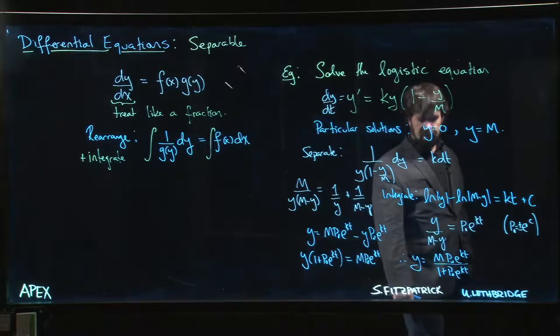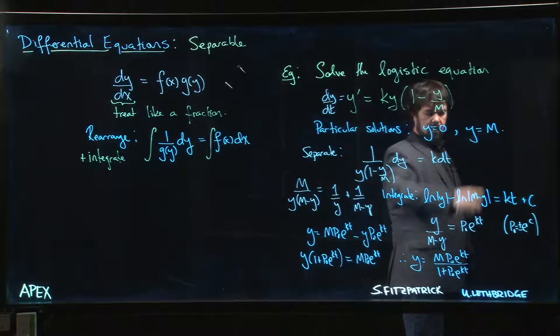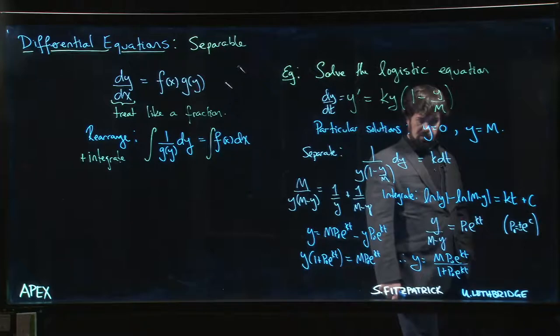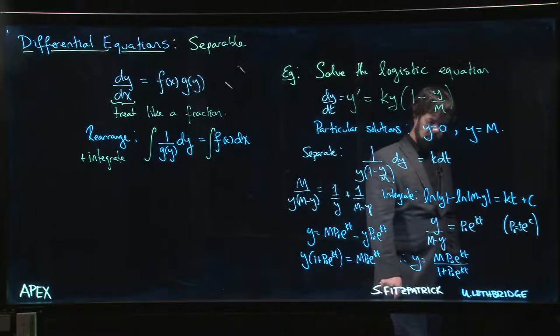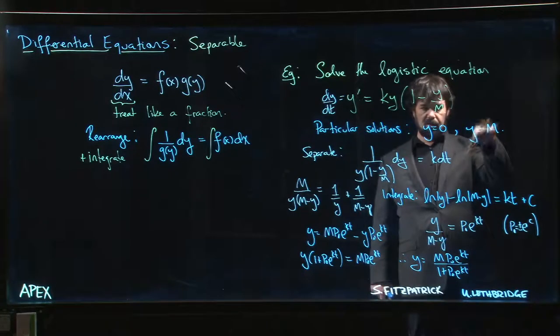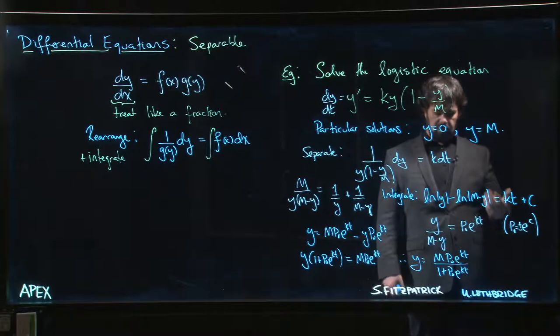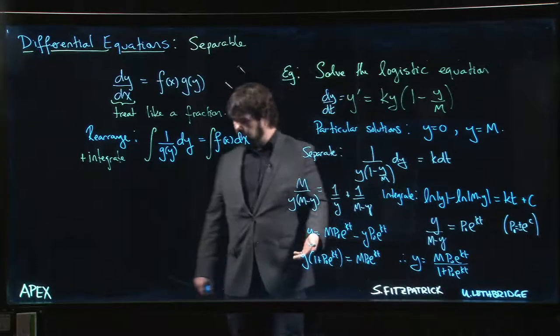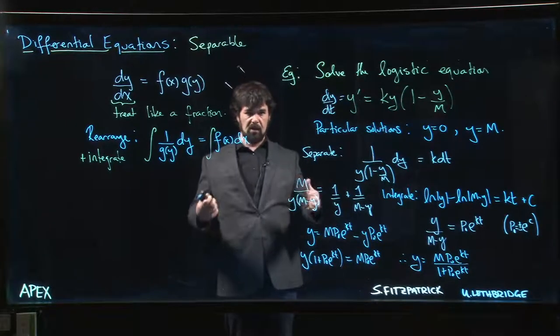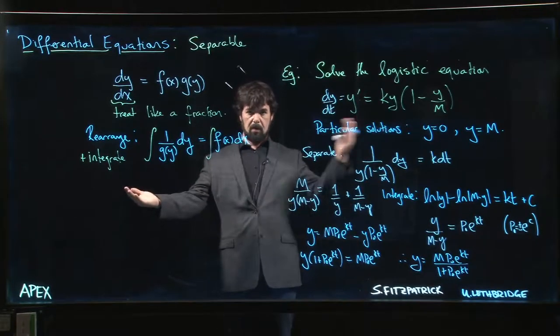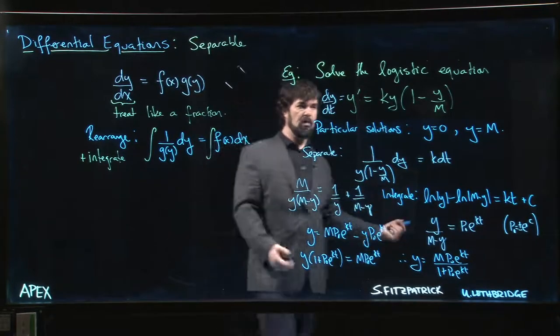One other thing to ask about is: can we choose a value for this p, p_0, this p sub zero? Can we find a value that gives us this constant solution y is equal to M? Doesn't look like it. So yeah, at least I can't think of one off the top of my head. So it's important to kind of make a note of that, say hey we have this other solution that works: y is equal to M. And so you kind of, you know, if you're looking at particular solutions for an initial value problem, you start breaking things in a different scenarios. Well, but what if the initial population is smaller than M? What if it's bigger than M?